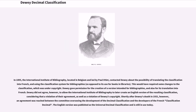In 1895, the International Institute of Bibliography, located in Belgium and led by Paul Otlet, contacted Dewey about the possibility of translating the classification into French and using the classification system for bibliographies, as opposed to its use for books in libraries. This would have required some changes to the classification, which was under copyright. Dewey gave permission for the creation of a version intended for bibliographies, and also for its translation into French. However, Dewey did not agree to allow the International Institute of Bibliography to later create an English version of the resulting classification, considering that a violation of their agreement as well as a violation of Dewey's copyright.